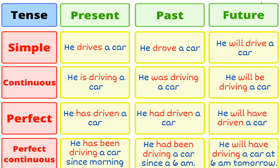Now here is another example. Simple present: 'He drives a car' — 'he' is singular so we add S to the verb, giving us 'drives.' Past tense: 'drove' is the past form of 'drive,' so 'he drove a car.' Future tense: 'he will drive a car' — we use the root form of the verb and only the auxiliary verb 'will' changes.